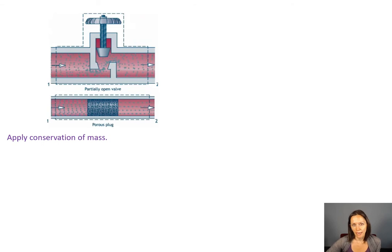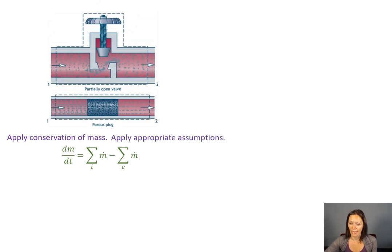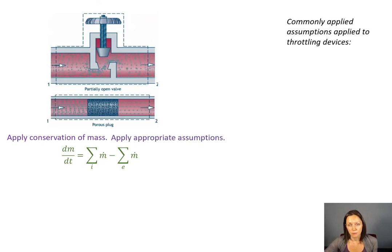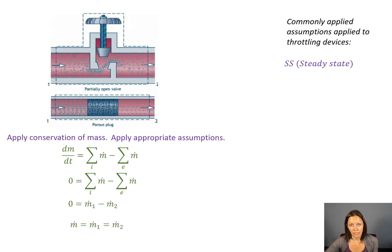So the first thing I'm going to do if I want to analyze this, I'm going to apply my conservation of mass. So I've got dm/dt equals the sum of the m dots coming in and the sum of the m dots going out. And then I'm going to apply some appropriate assumptions. If I want to make the assumption of steady state, then that dm/dt goes away. And I can see that the mass flow rate at the inlet and the outlet are exactly the same, so I could just drop that subscript.